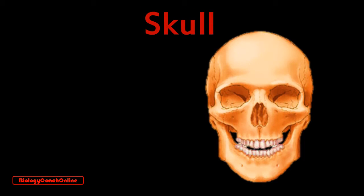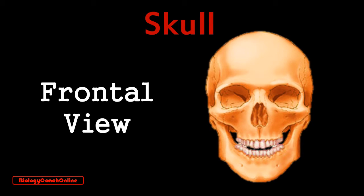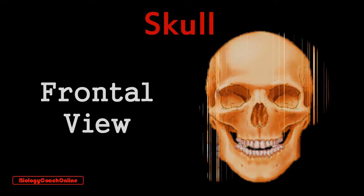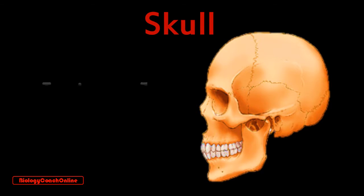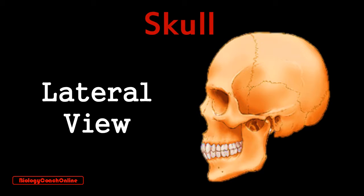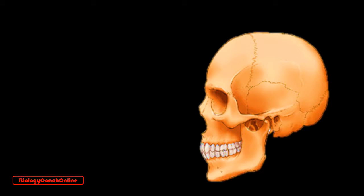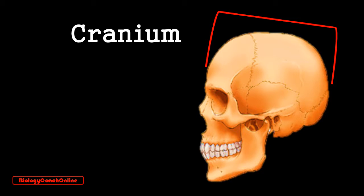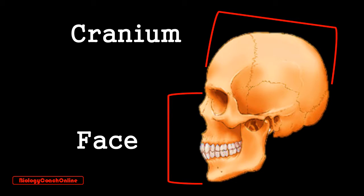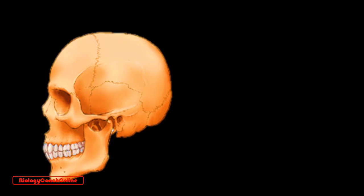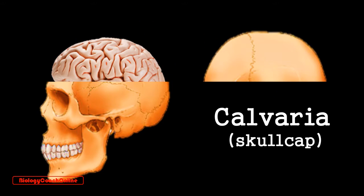Your skull is the bony structure that forms your head. For reference, this is a frontal view. If we then rotate the skull 90 degrees then we have a lateral or side view. Now your skull is effectively divided into two distinct sections: the cranium and the face. If we remove the cranial covering — the calvaria or skull cap — then we can look inside and see the brain. And therein lies one of the purposes of the skull: to surround and protect your brain.